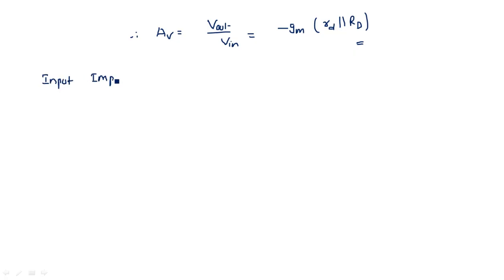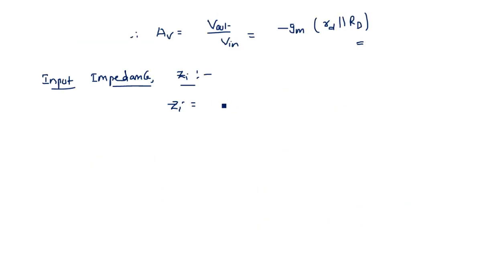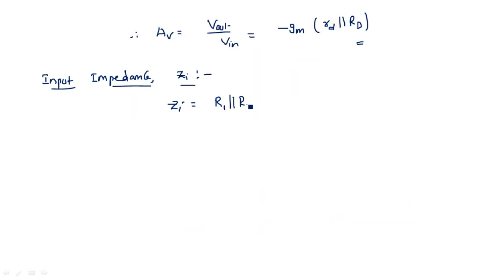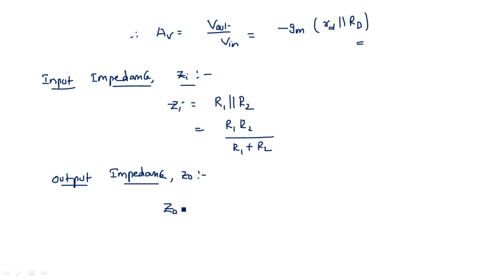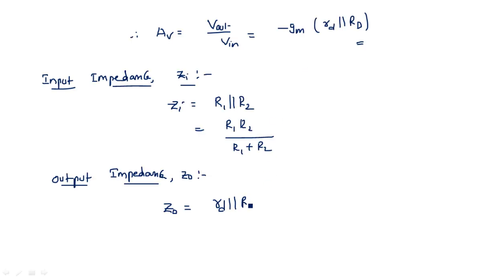Coming to input impedance ZI: looking at the circuit from the input terminals, ZI equals R1 in parallel with R2, which is R1·R2 / (R1 + R2). For output impedance Z0: from the output terminals, Z0 equals RD in parallel with rd, which is RD·rd / (RD + rd).